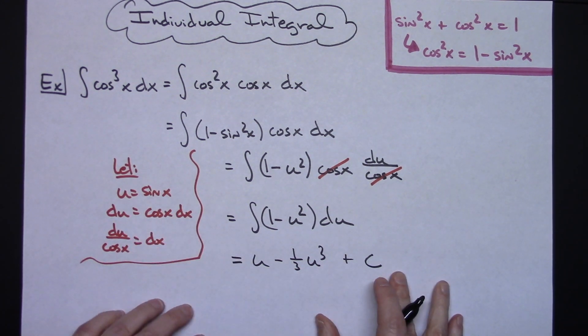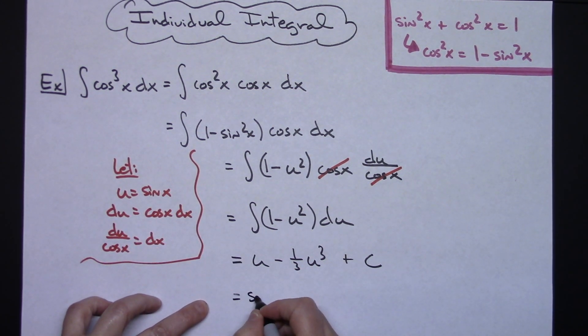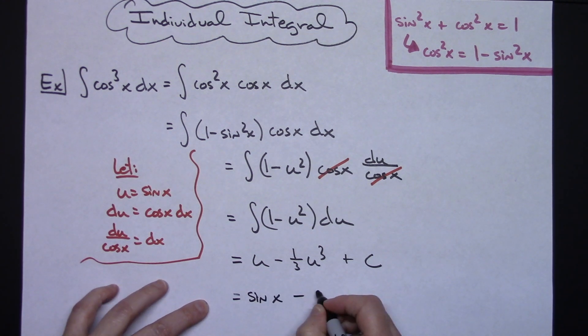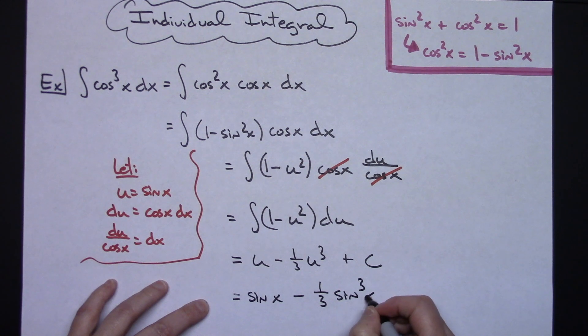Replacing u with what we said it was going to be, it's going to be sine x. So then I'll have sine x minus 1 third sine to the third x, and then plus c.